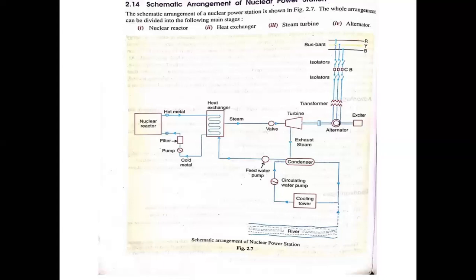After striking the steam turbine, the pressure gets reduced. This low pressure steam is passed to the condenser, which condenses the steam back into water. This water is again fed to the heat exchanger. This process goes on simultaneously. In the heat exchanger, water is also taken from a river with the help of a cooling tower and fed back in, so the process continuously and efficiently goes on in the nuclear reactor.